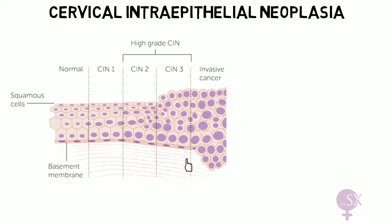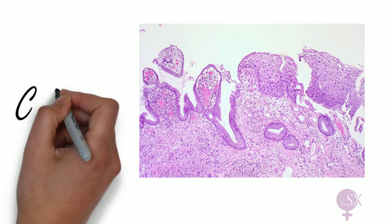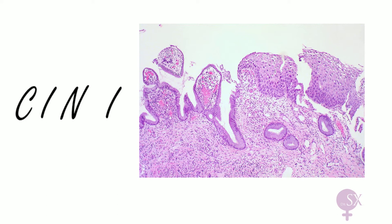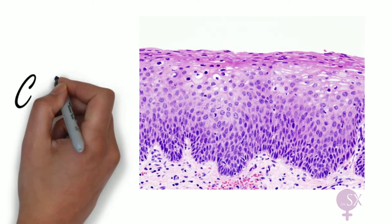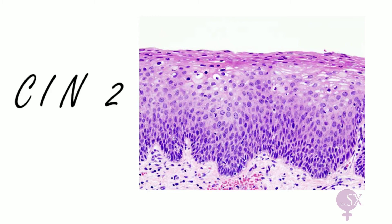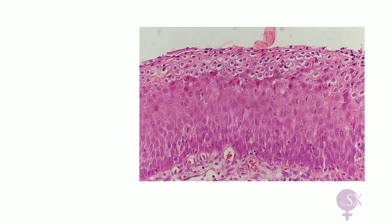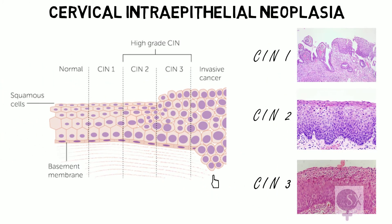Abnormal cells throughout the full thickness of the epithelium makes this CIN 3. If the abnormal squamous cells invade the basement membrane, this is referred to as invasive cancer. Looking at histology images: CIN 1 has abnormal cells in the lower one-third, CIN 2 in the lower two-thirds, and CIN 3 in the full thickness of the epithelium. If a result of CIN 1, 2, or 3 is obtained from a cervical biopsy, being a precancerous lesion, we need to remove it.